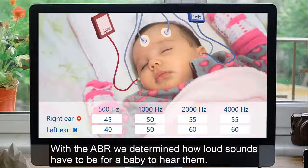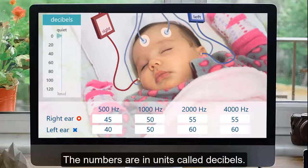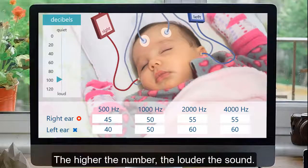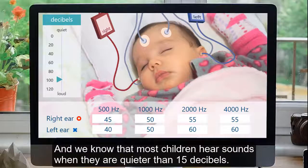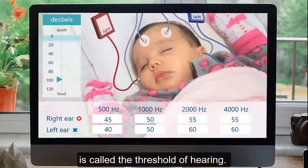With the ABR, we determined how loud sounds have to be for a baby to hear them. The numbers are in units called decibels. The higher the number, the louder the sound. Most children hear sounds when they are quieter than 15 decibels. The point at which a child just begins to hear the sounds that are quiet for them is called the threshold of hearing.